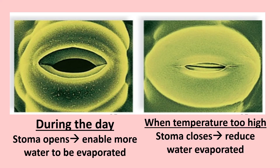During the day, the stoma opens to allow gas exchange to occur. At the same time, water vapor is also lost through the stoma of the leaf through transpiration, which increases the rate of water intake by the roots. The leaf will look fresh. But during a very hot day, the stoma is closed to reduce water loss through transpiration, and the leaf wilts under the hot sun.